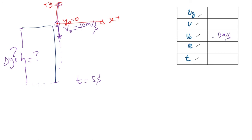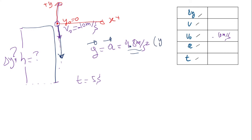This object is in free fall, meaning it is under the acceleration of gravity only. The Earth will be pulling it downward, so the acceleration of gravity is downward. Acceleration is a vector — it has a magnitude of 9.8 meters per second squared and its direction is downward, which we represent with negative y. So we have negative 9.8 meters per second squared in the y direction.